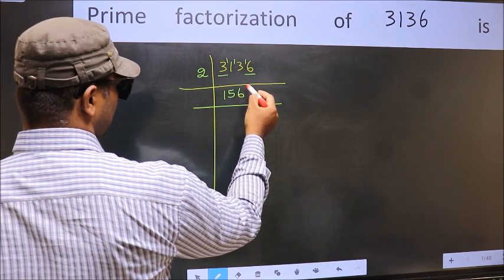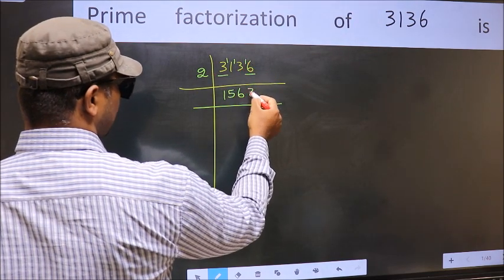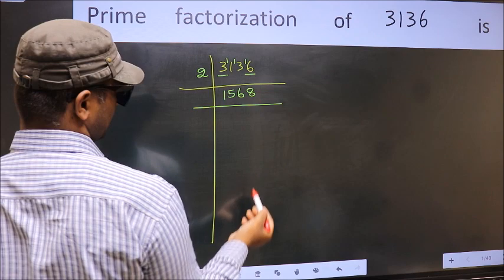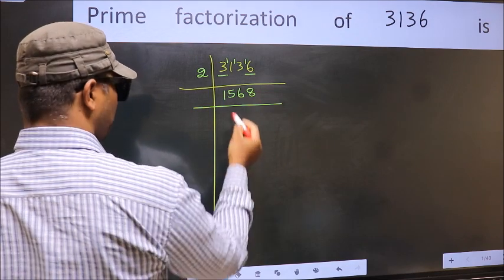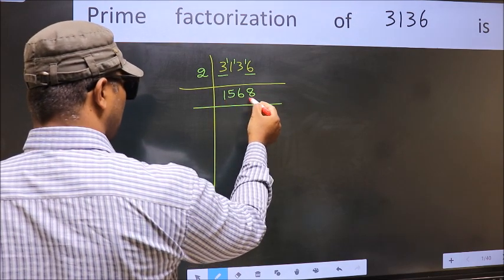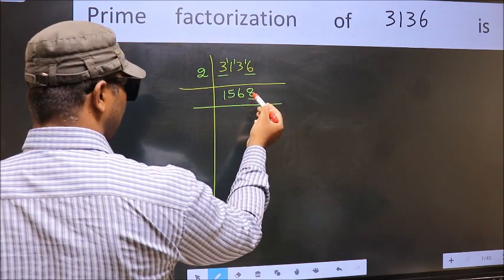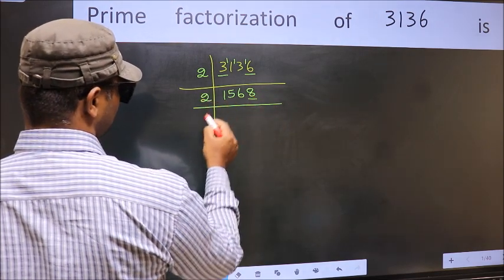When do we get 16 in the 2 table? 2×8=16. Now the last digit is 8, so take 2.